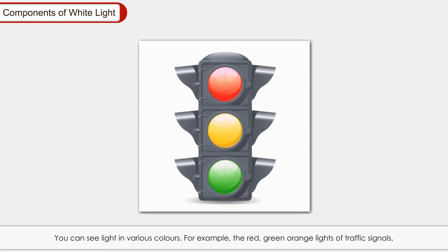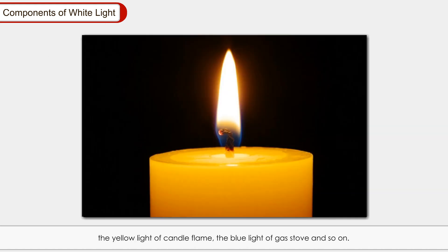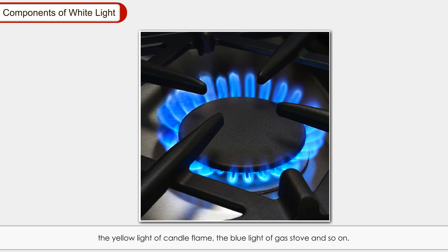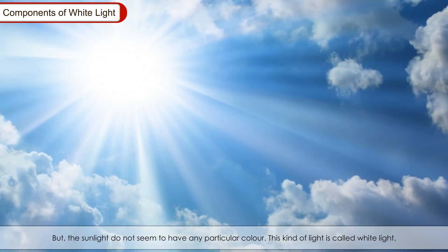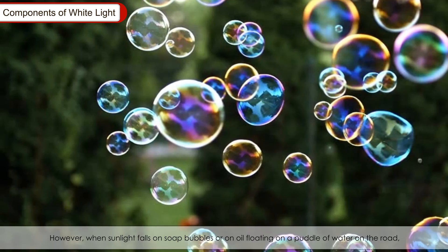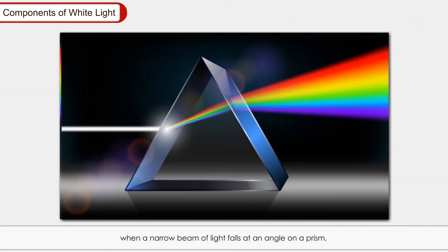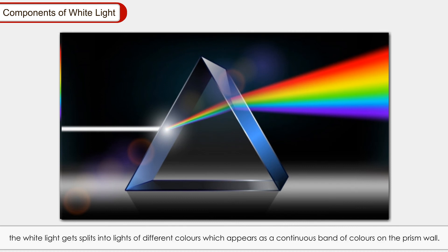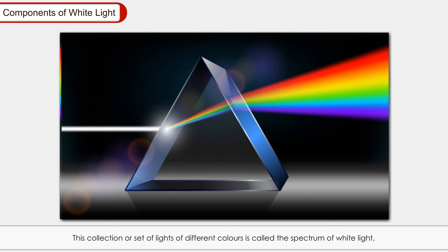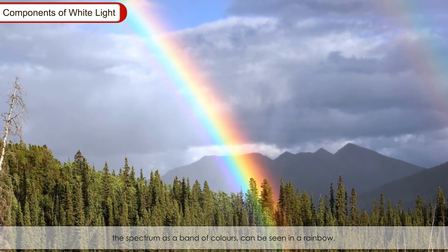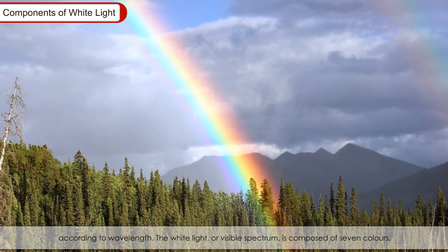Components of white light: Light can be seen in various colors — red, green, and orange in traffic signals, yellow in a candle flame, and blue in a gas stove. Sunlight does not seem to have any particular color and is called white light. However, when sunlight falls on soap bubbles or oil floating on water, many colors become visible. When a narrow beam of white light falls at an angle on a prism, it splits into lights of different colors, appearing as a continuous band on the wall. This collection of colors is called the spectrum of white light, and can also be seen in a rainbow, produced by separation of light components by their different degrees of refraction according to wavelength.